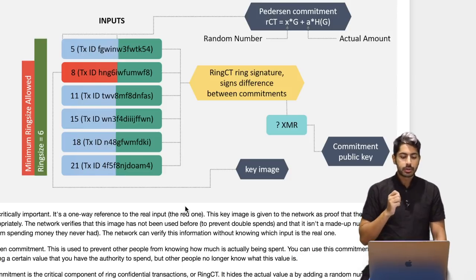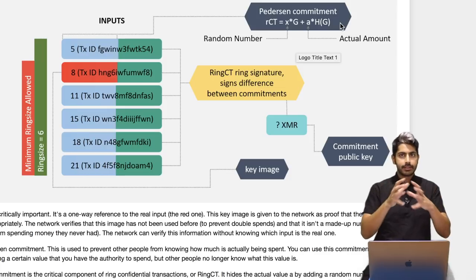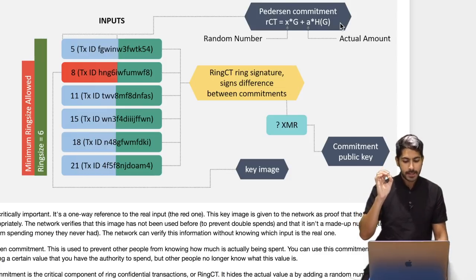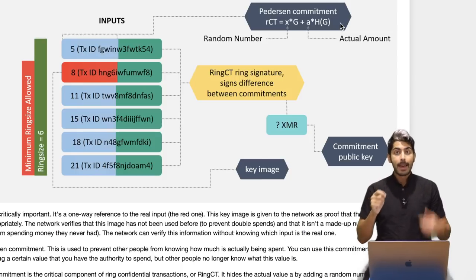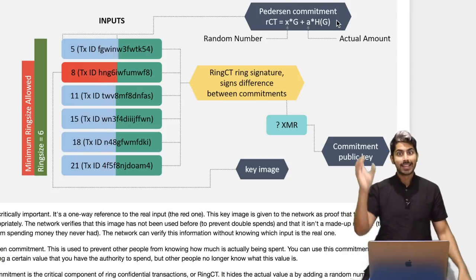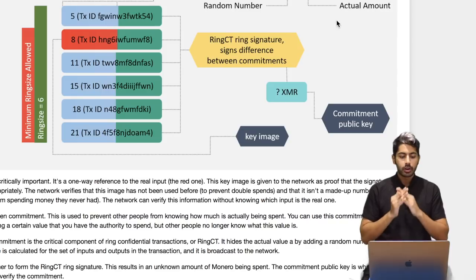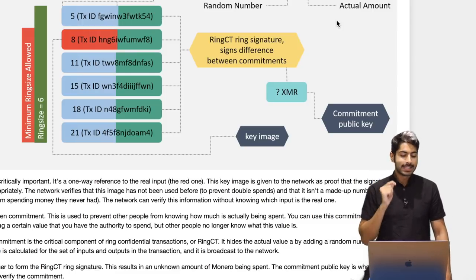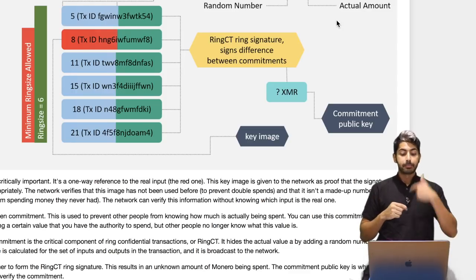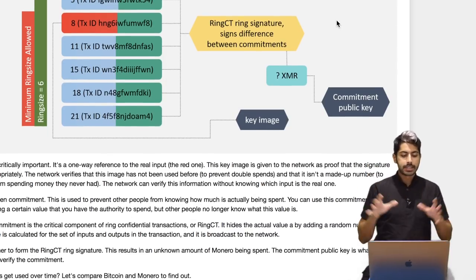Next is the Pedersen commitment, used to prevent other people from knowing how much is actually being spent. The actual amount A is multiplied by a random number X and a constant value, and the result is a commitment number. You can use this commitment to commit to spending a certain value that only you have authority to spend, but other people don't know what that value is because it's the result of this formula — not the original amount — and that's what's public. The Pedersen commitment is a critical component of Ring Confidential Transactions (Ring CT). It hides the actual value by adding a random number X. The commitment value is calculated for the set of inputs and outputs and broadcast to the network, forming the Ring CT ring signature — the result being an unknown amount of Monero being spent.